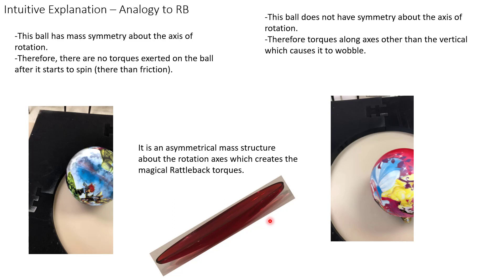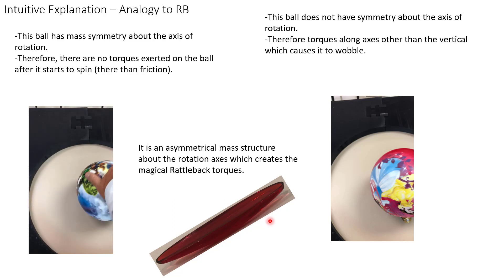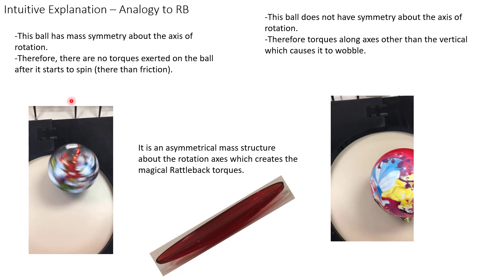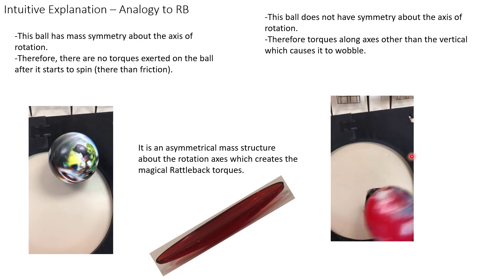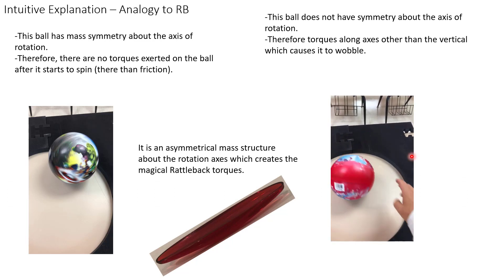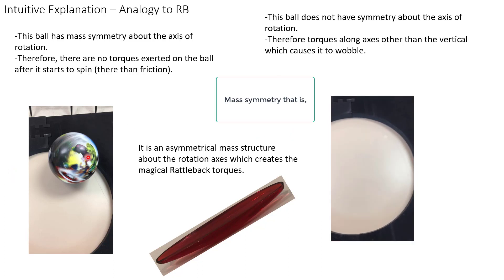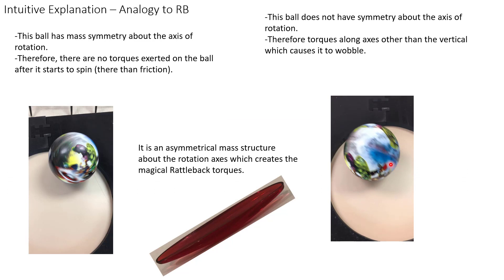So the slides after this get kind of technical, so I thought I would provide an intuitive explanation before I move on. The first video is just me rotating, providing a torque to allow this ball to rotate along an axis through the top, just rotating along a vertical axis. The second video, I put a mass at the edge. This ball doesn't have symmetry about the axis of rotation. The center mass here is right at center. Here, it's no longer at center, so it's asymmetrical with respect to the rotation axis. These torques along the non-vertical axis cause this thing to wobble. So it's the asymmetrical mass structure about the rotation axis which actually creates this magic rattleback torques.